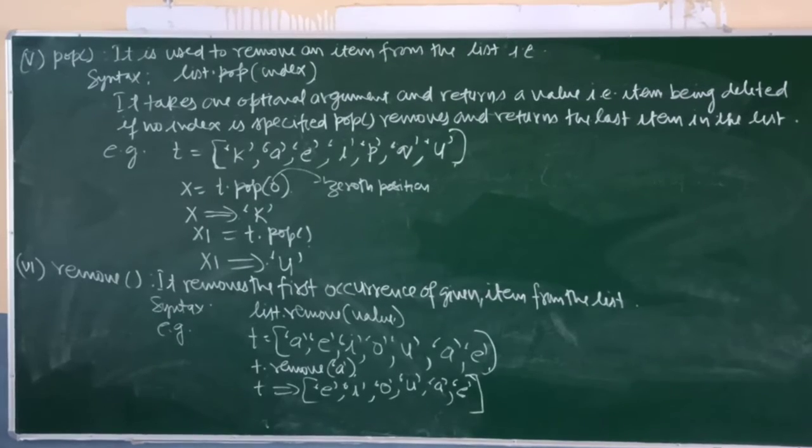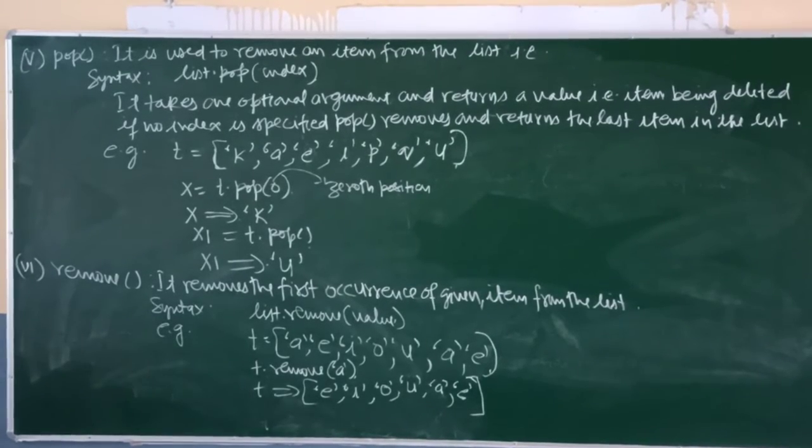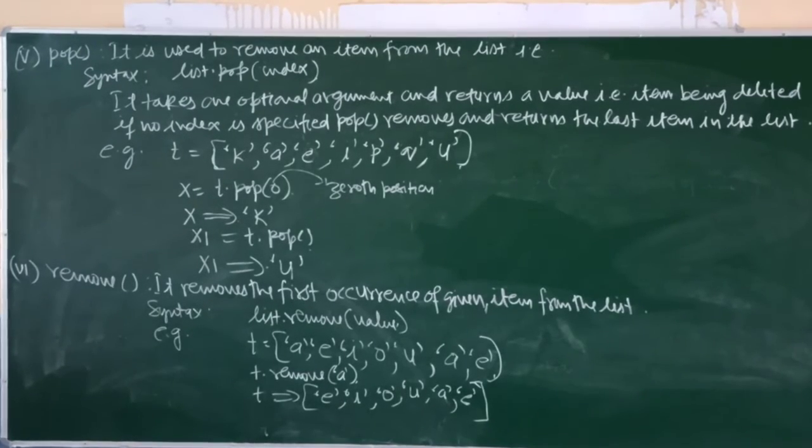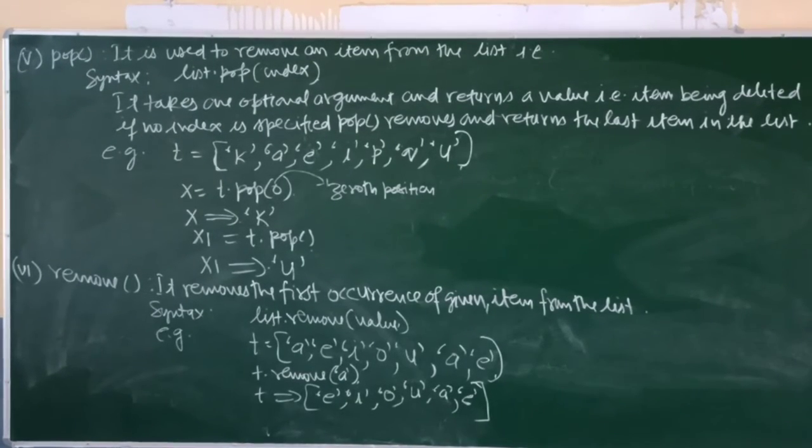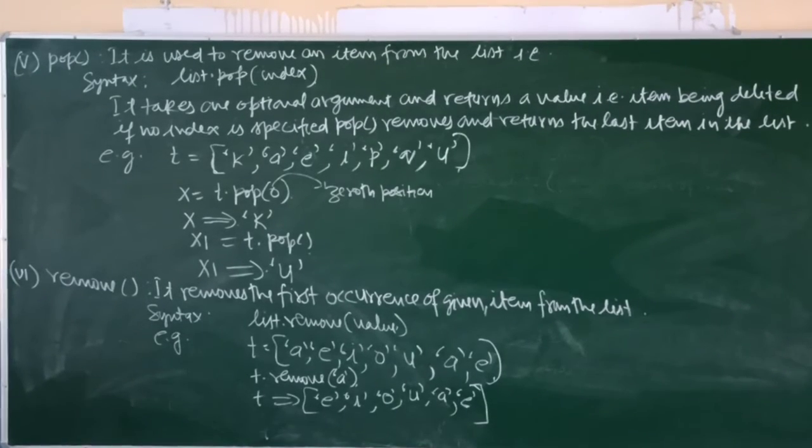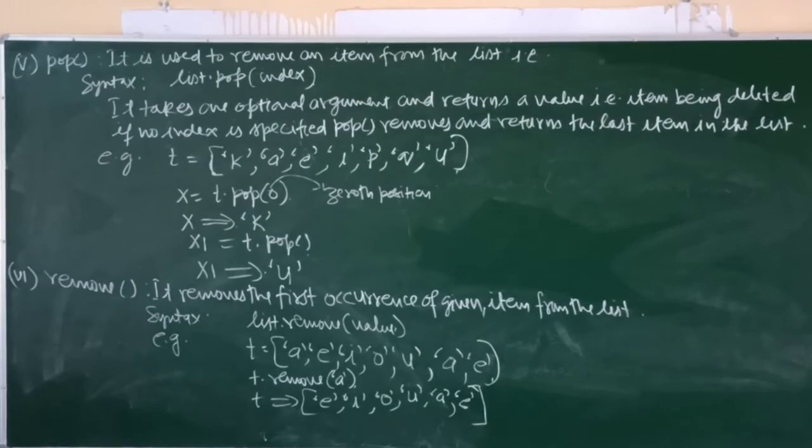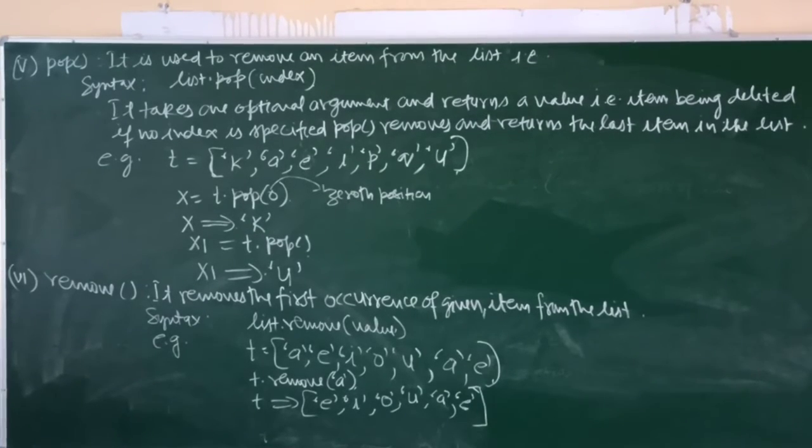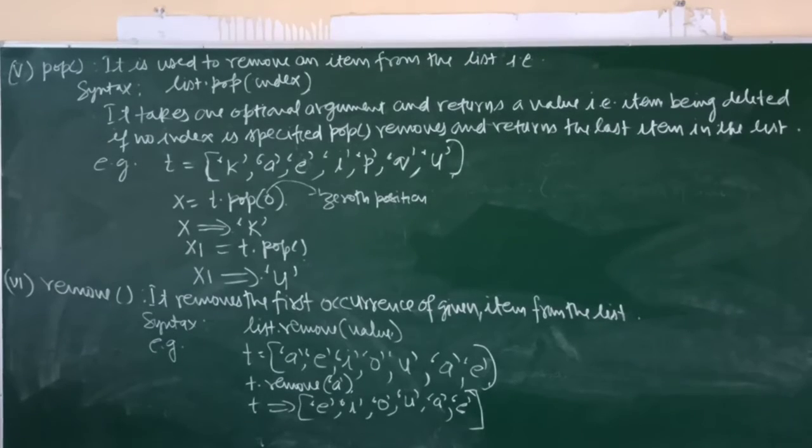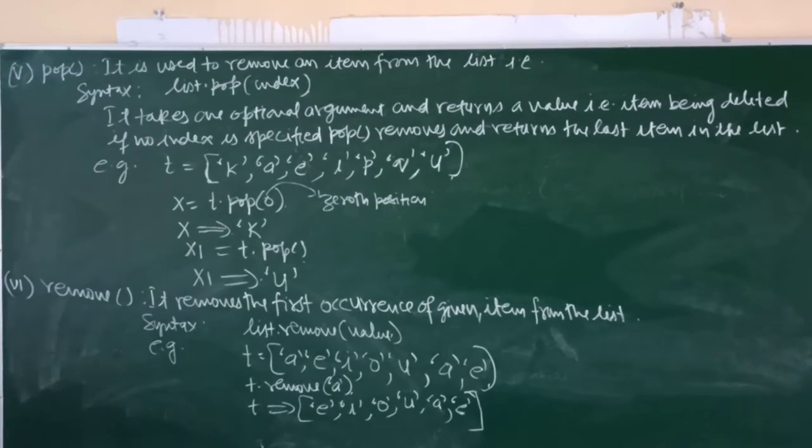For example, t is equal to k, a, e, i, p, q, u. Then x is equal to t.pop(0). That is 0th position. Then x will give you k. And another way of using it, x1 is equal to t.pop without any argument. Then x1 returns or gives you u.